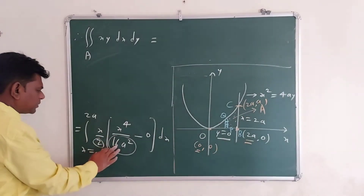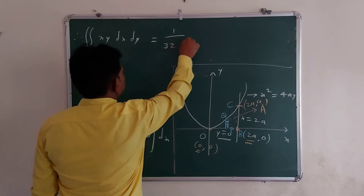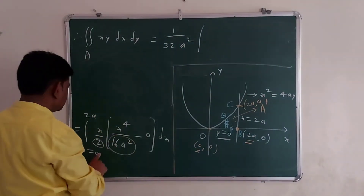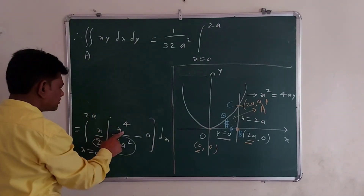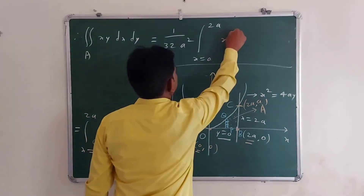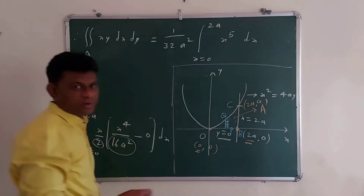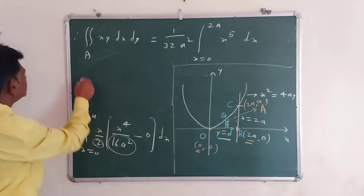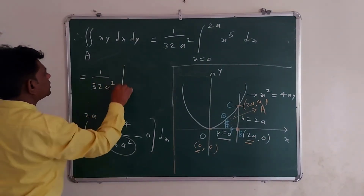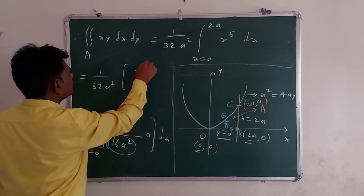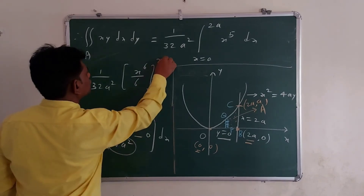Now, (1/2) × (1/16A²) = 1/(32A²). So we have (1/32A²) times the integral from X = 0 to 2A of X · X⁴ = X⁵ dX. The integration of X⁵ is X⁶ / 6. So this equals (1/32A²) · [X⁶ / 6] evaluated from X = 0 to X = 2A.